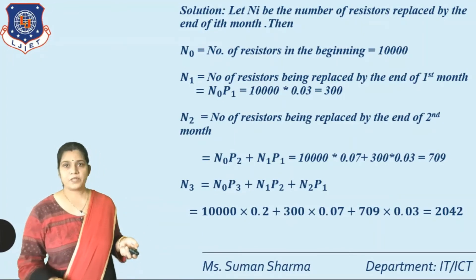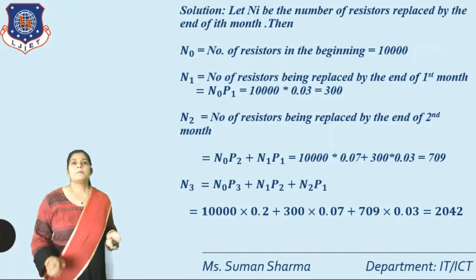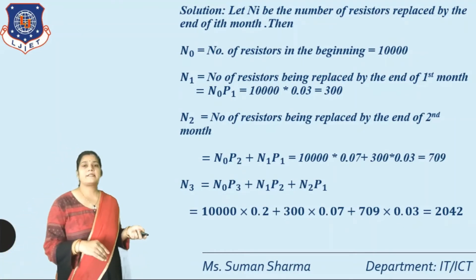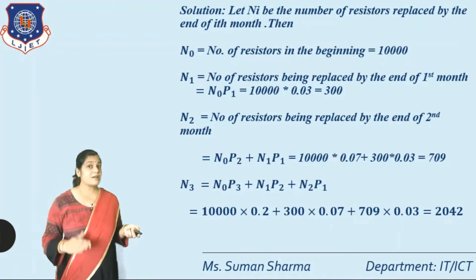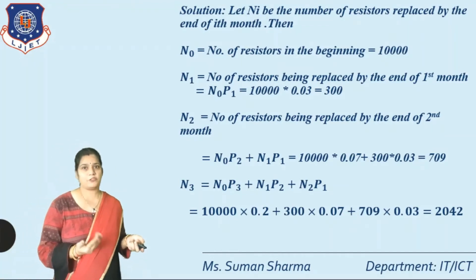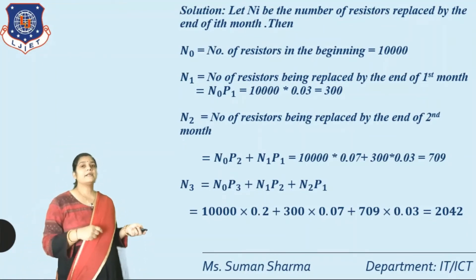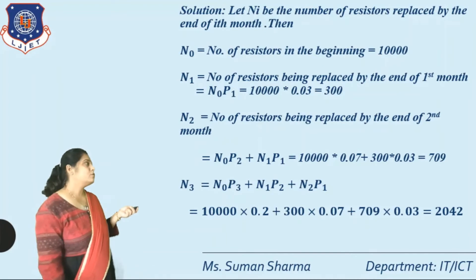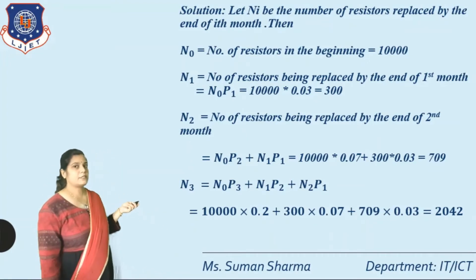N3 = N0×P3 + N1×P2 + N2×P1. Substituting: 10,000 × 0.2 + 300 × 0.07 + 709 × 0.03 = 2000 + 21 + 21.27 ≈ 2042.